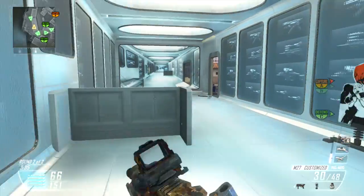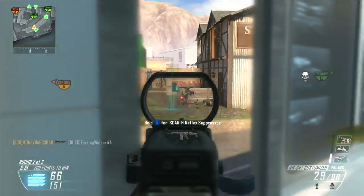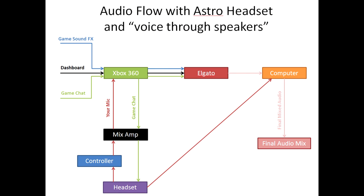My particular Astro system has USB power, and that USB is also a microphone output which I plug into the computer. You can see that from the microphone line from the headset, and it also goes directly into the mix amp. With the Astro headset and voice-through-speakers on — which you have to have for this to work — you get your game sound, dashboard sound, and game chat. The game chat comes through the TV speakers via optical cable, HDMI, or component cables, sending that noise to the Elgato. It also sends your game chat to your mix amp and headset so you can hear it. Your headset sends voice to the controller and to the mix amp, and if you're plugging into the computer via USB or an old RCA cable, that audio goes directly to the computer as well.